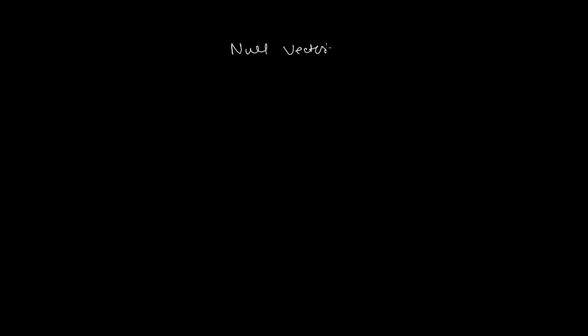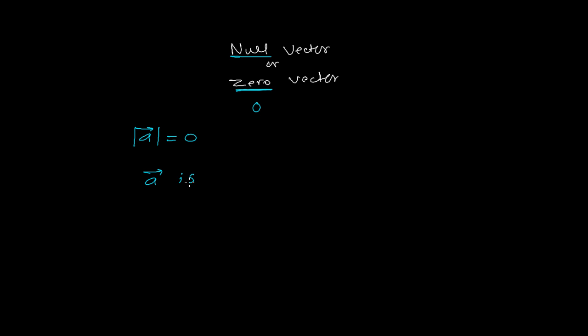After learning unit vectors, let me discuss the null vector, or zero vector. From the name itself it is clear — null means nothing, zero means nothing. So the vectors whose magnitude is zero are called zero vectors or null vectors. If I have a vector A whose magnitude equals zero, then vector A is a null or zero vector.